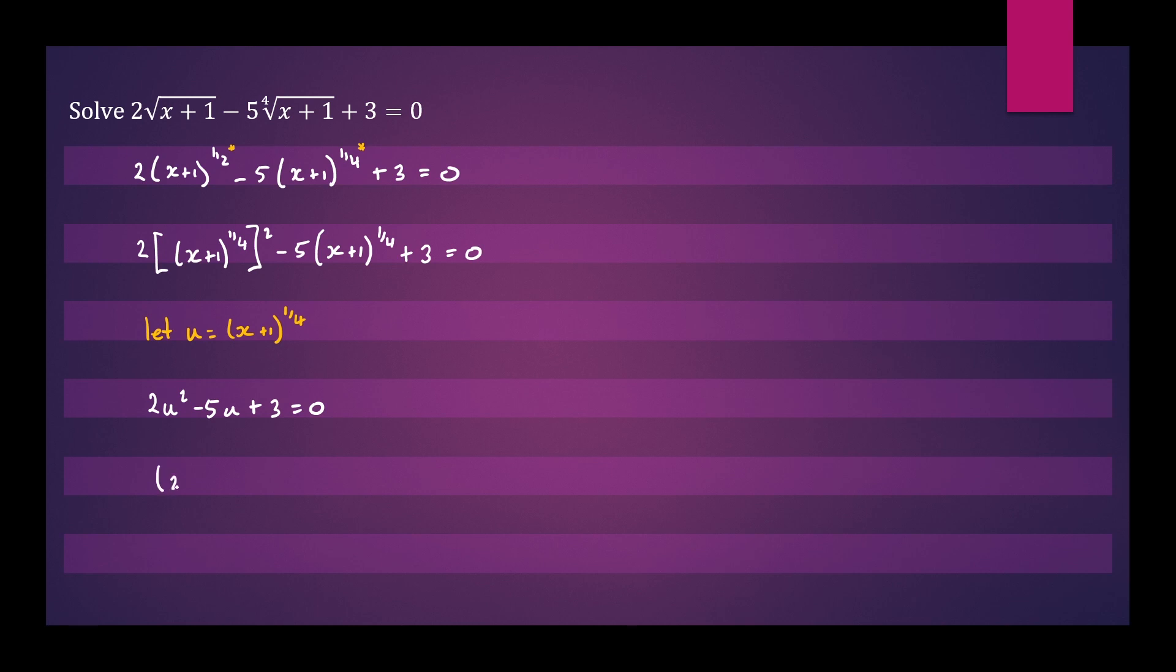So the factors will be 2u minus 3 and u minus 1 equals 0. So u can equal 3 over 2 or 1.